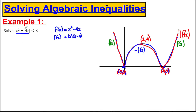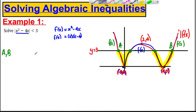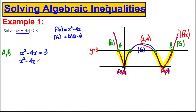We want to find where this graph is less than 3, so we draw the line y = 3. The graph is below y = 3 in certain regions, so we need to find intersection points A, B, C, and D. For points A and B, the mod f(x) graph equals the original f(x), so we solve x squared subtract 4x = 3, which gives x squared subtract 4x subtract 3 = 0. Using the quadratic formula: x = 2 plus or minus the square root of 7.